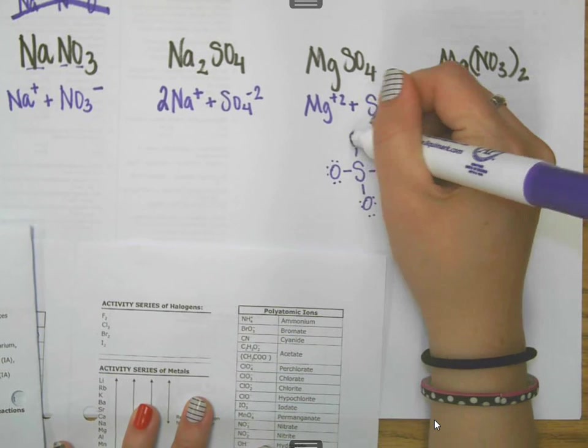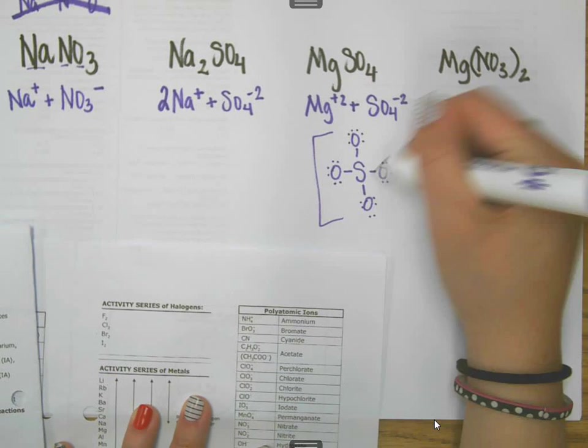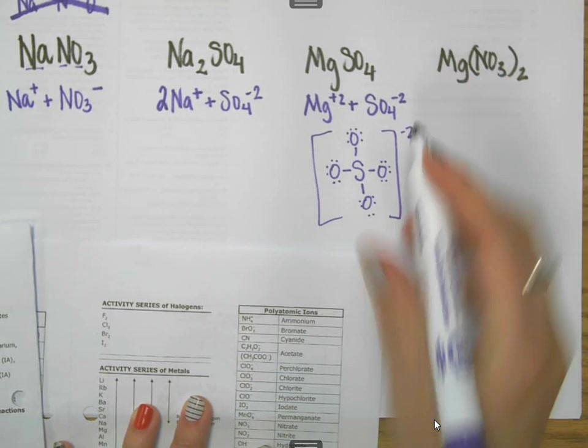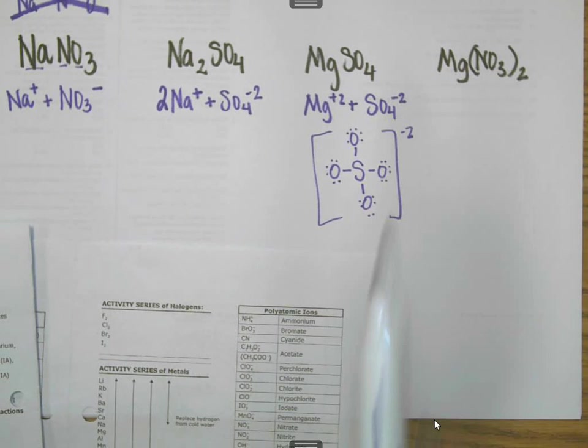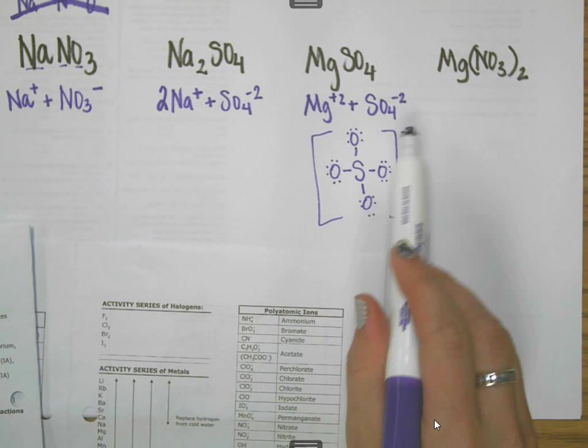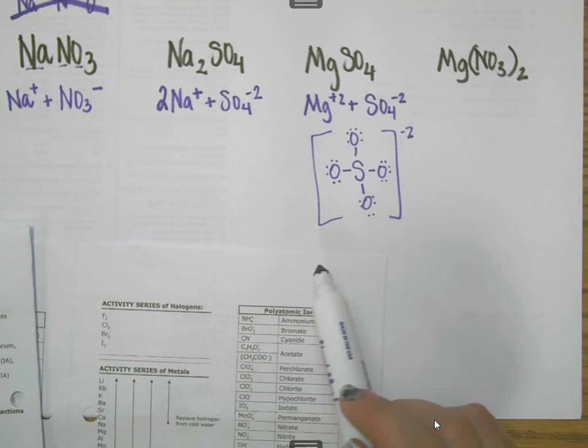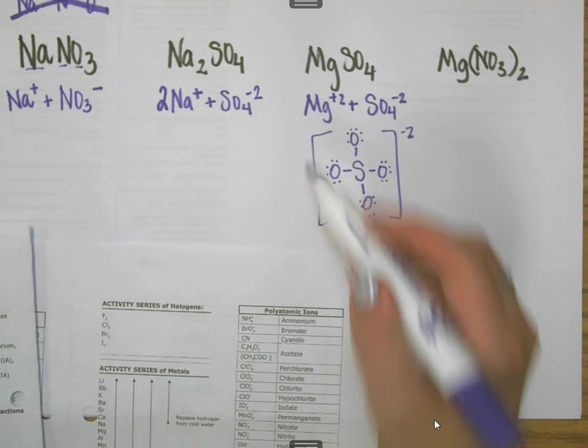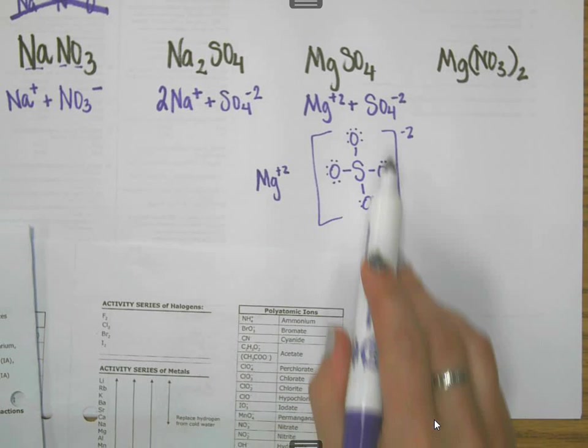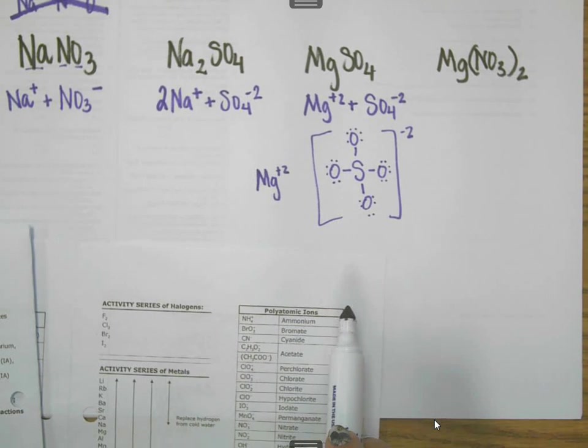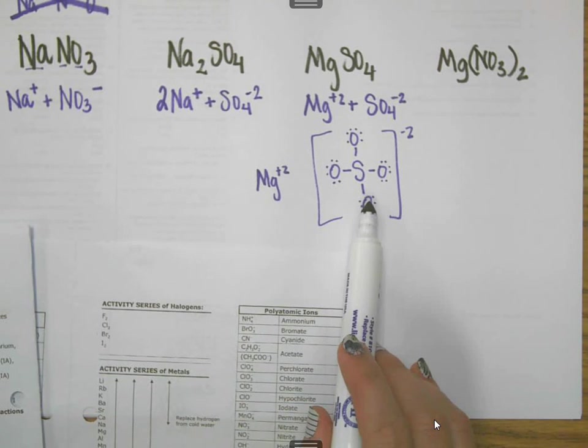The whole thing has a negative two charge. This whole thing travels as a group. I can't break it up over here in my breaking apart of ions. It has to stay together as a group. The way this is actually written is that it would be one magnesium ion, and then it would be one of these if you actually want to draw the thing out. This got its extra two electrons from the magnesium.